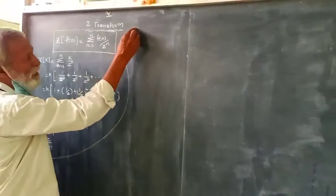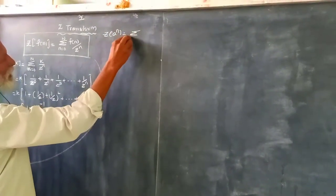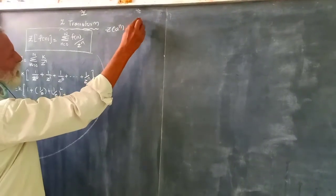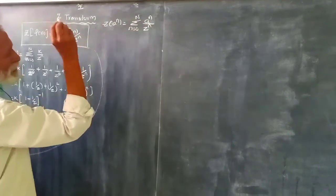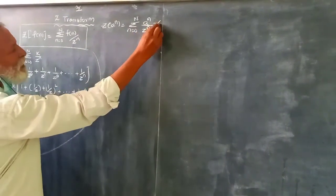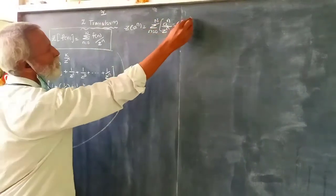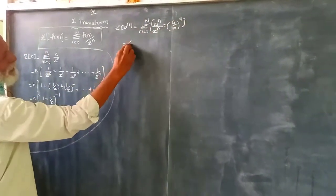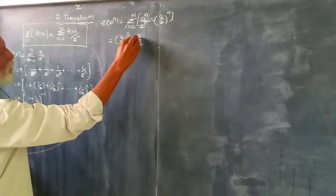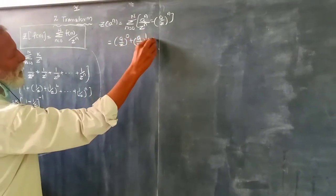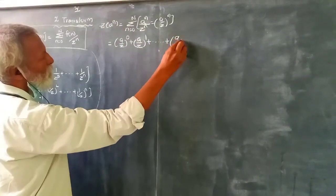Z transform of a^n. Summation n equals 0 to infinity of a^n by z^n equals summation (a/z)^n. That's (a/z)^0 plus (a/z)^1 plus (a/z)^2, up to (a/z)^n.